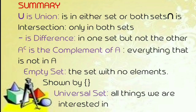Summary: U is union — it is either set or both sets. Intersect is intersection — only in both sets. Dash is difference — it's one set but not the other. Ac is the complement of A — everything that is not A. Empty set is the set with no elements, shown by empty curly brackets. Universal set is all things we are interested in. Ang U ay union o pagsasama. Intersection ay nasa parehas na set. Difference ay nasa isang set pero wala sa iba. Ac naman ay complement — lahat ng hindi kasama sa letter A. Empty set ay walang laman na set. Universal set ay lahat ng bagay kung saan tayo ay interesado.